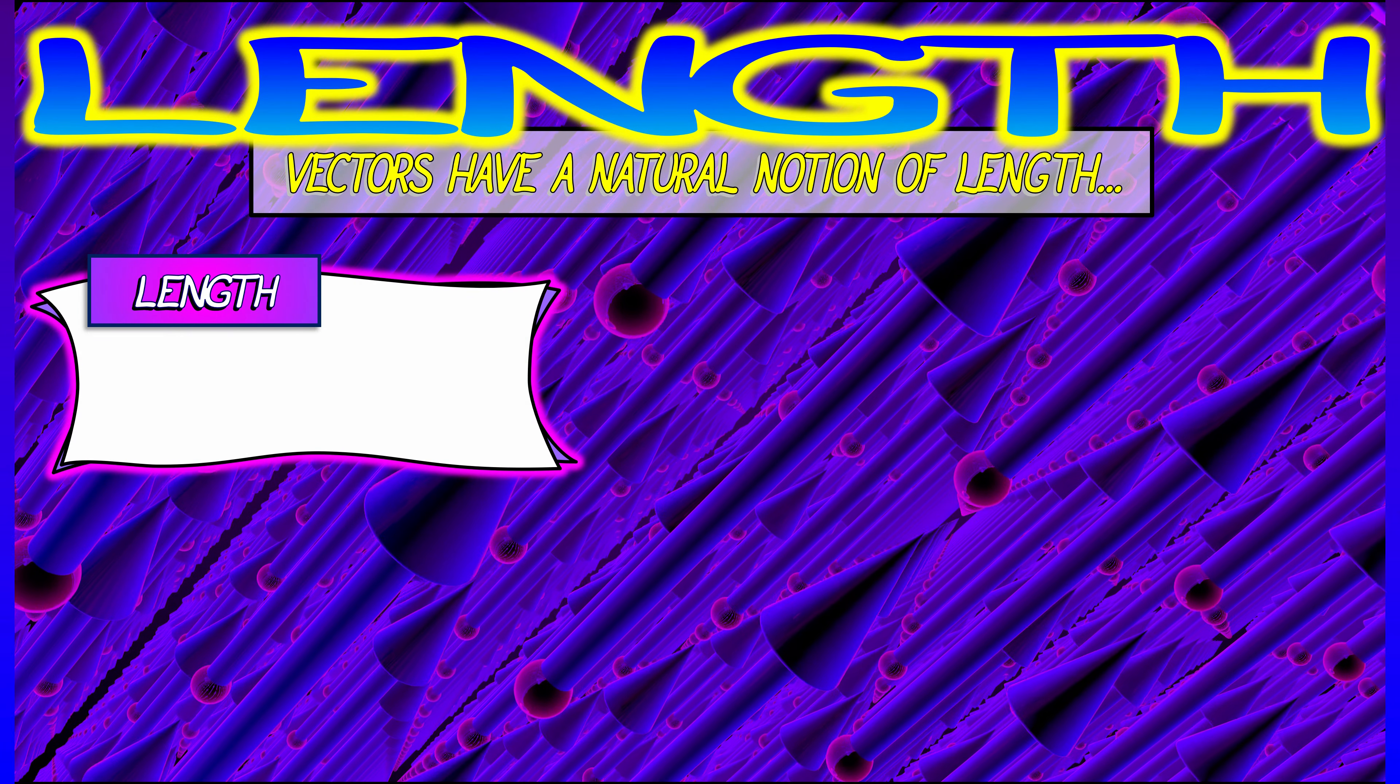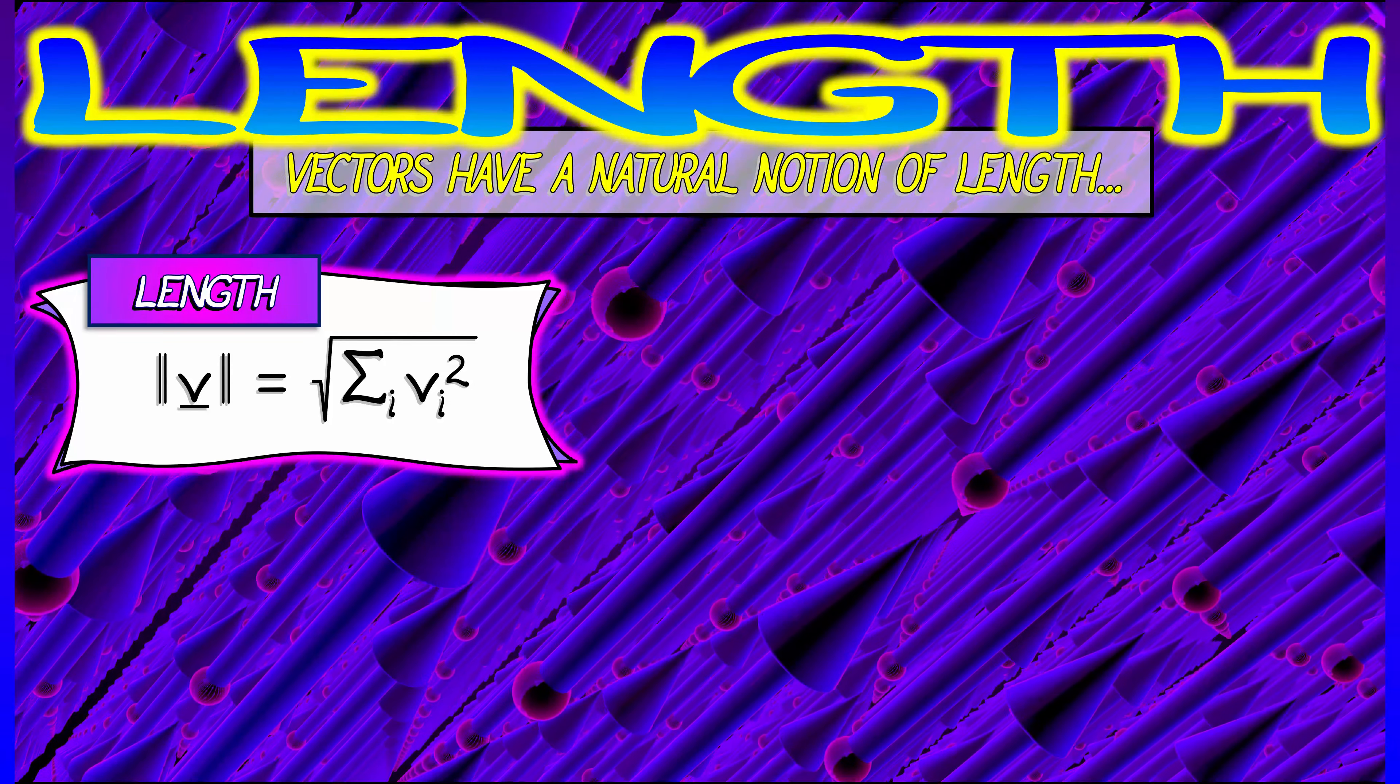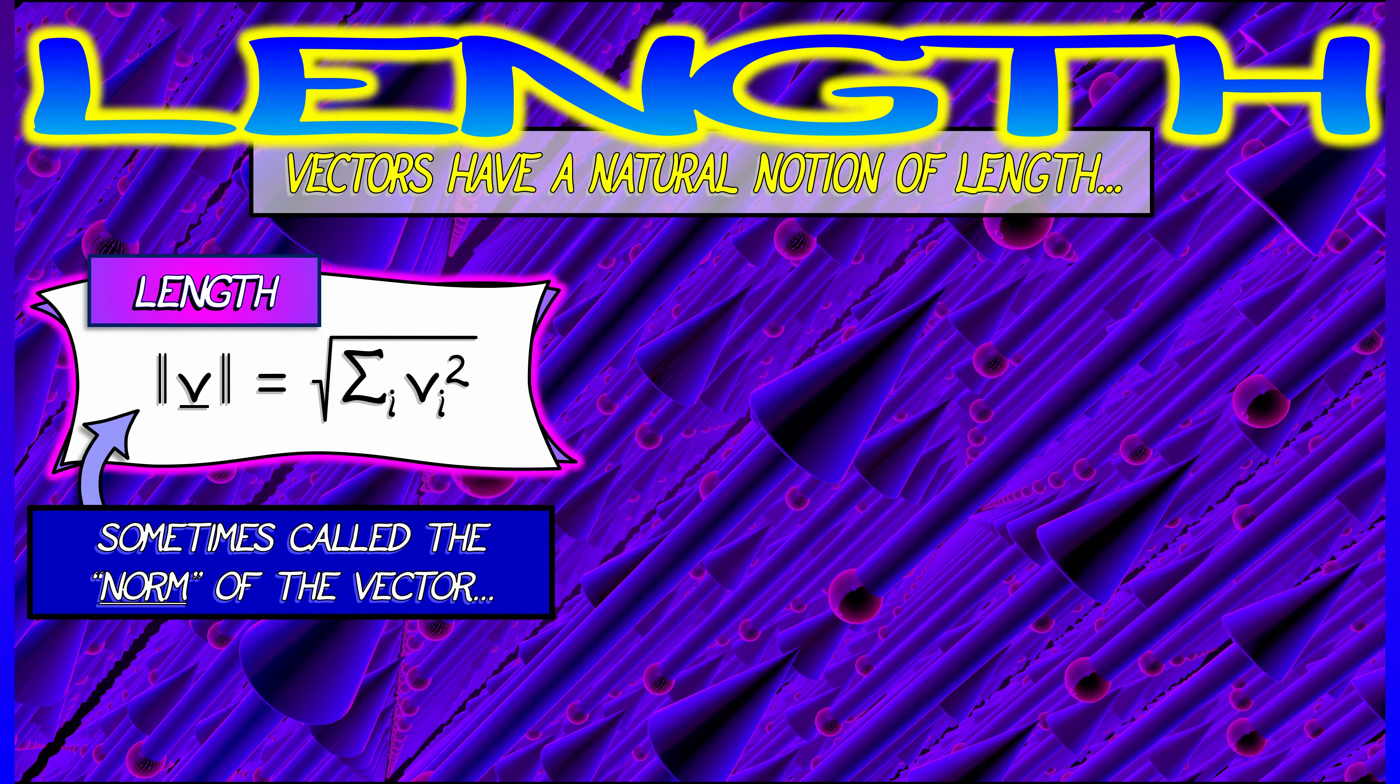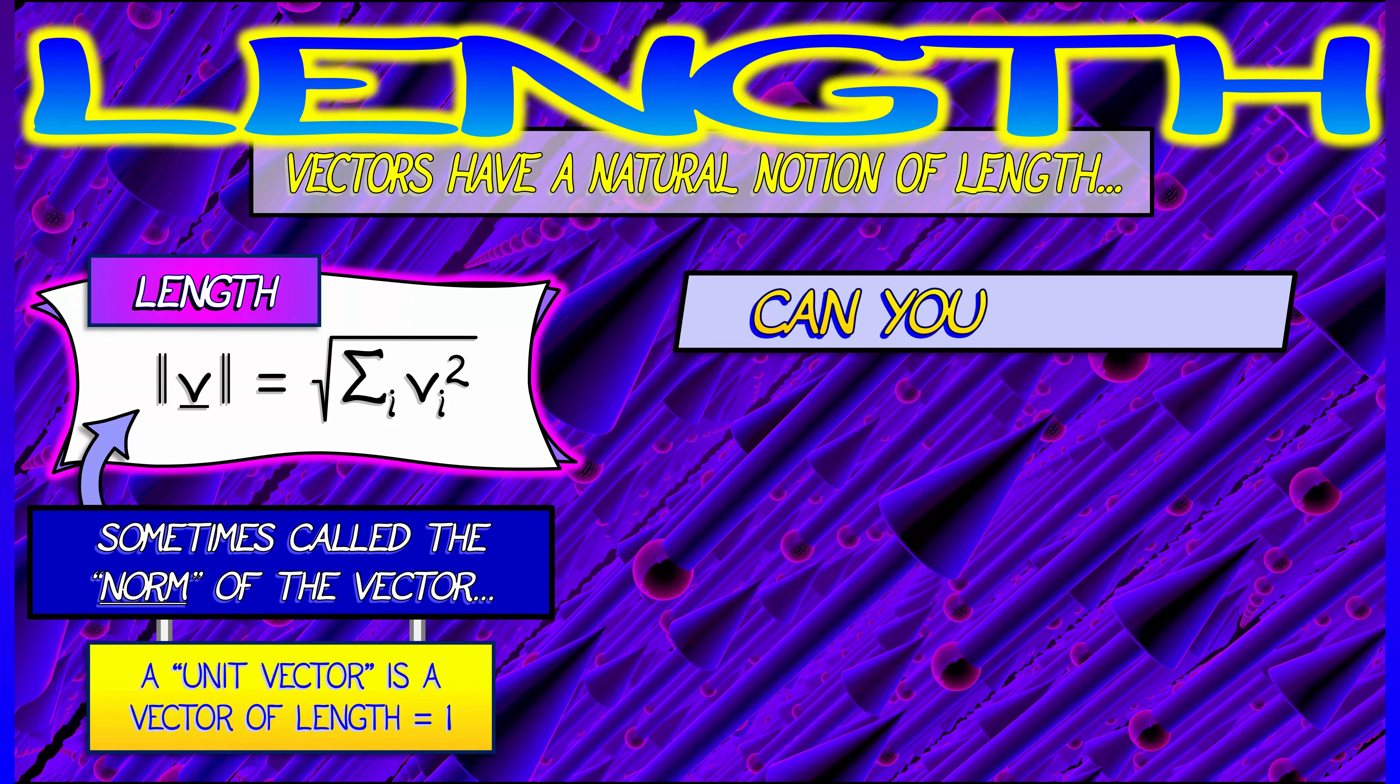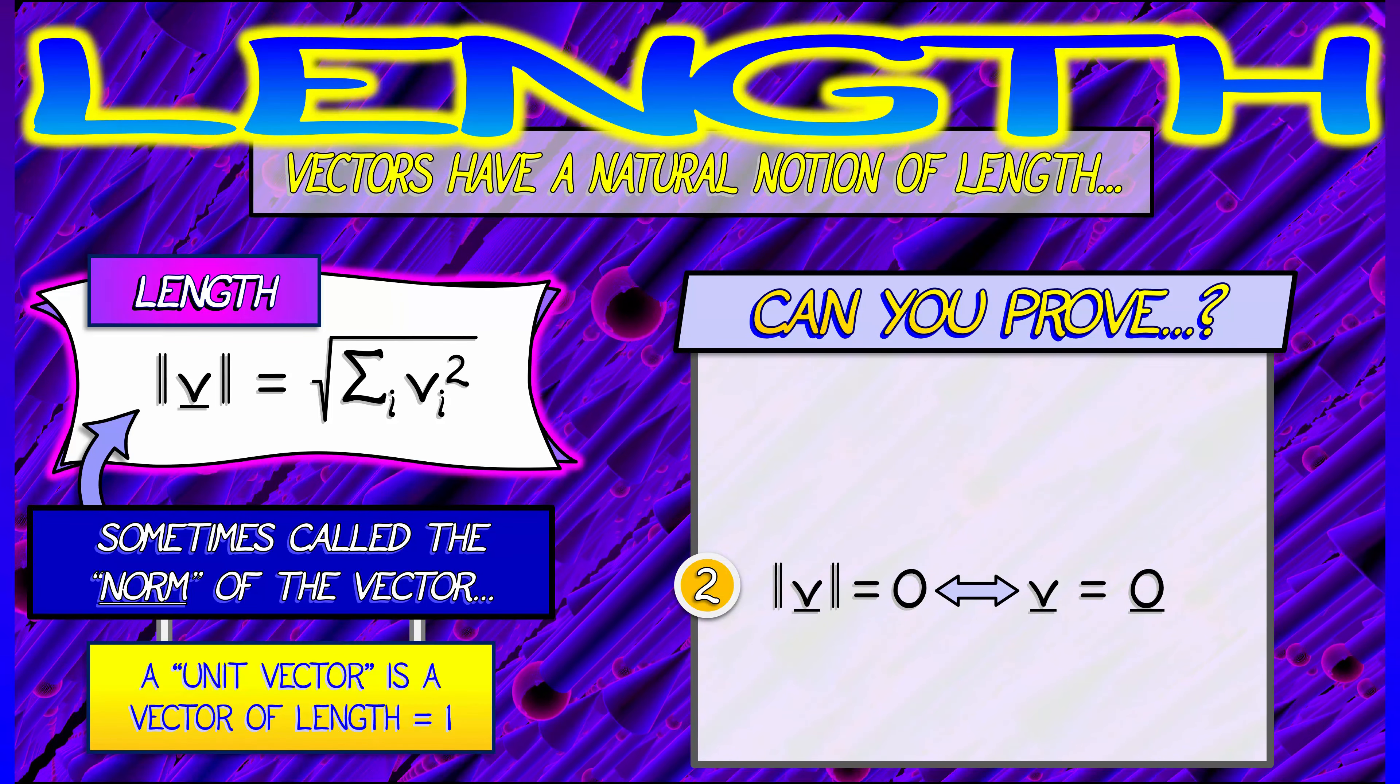Now we've spoken of the length of a vector, but it's time to define it more formally. Given a vector v, the length of v, written with those double absolute value signs, is defined as the square root of the sum of the squares of the components of v. This makes a lot of sense if you think about a vector as a difference between two points—it's really the distance. Sometimes we'll call this the length of v, sometimes the norm of v. A unit vector is a vector of norm one. Here are a couple of facts.